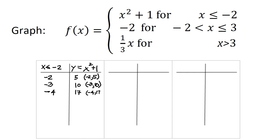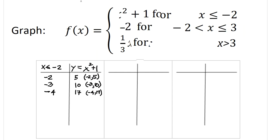This is going to be the part of the graph just up to negative 2. And it is going to include negative 2, because the condition is x is less than or equal to negative 2.